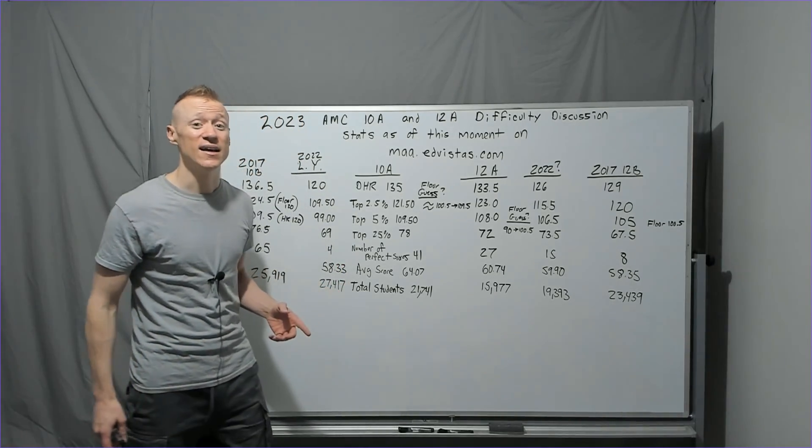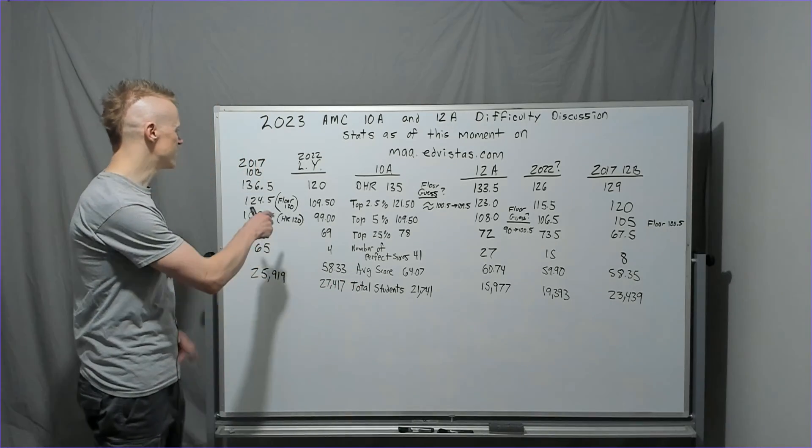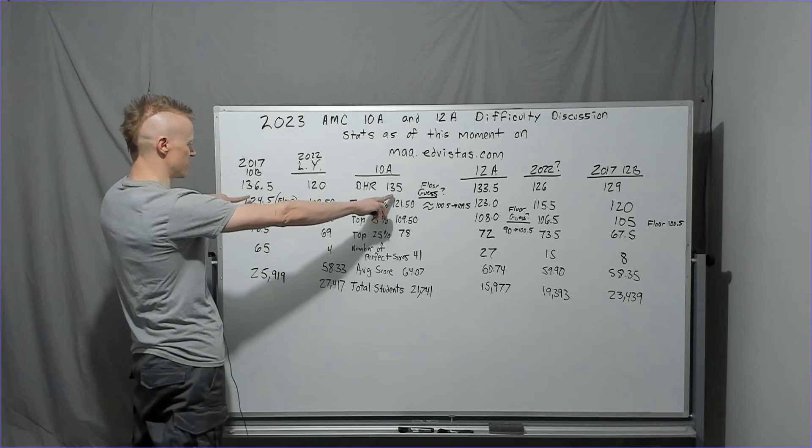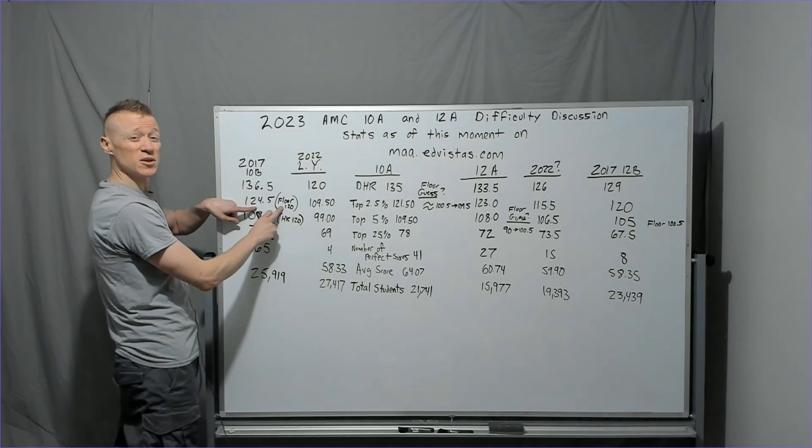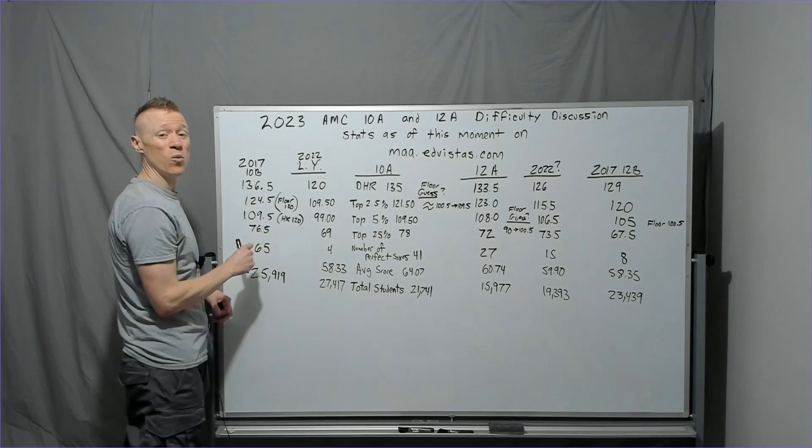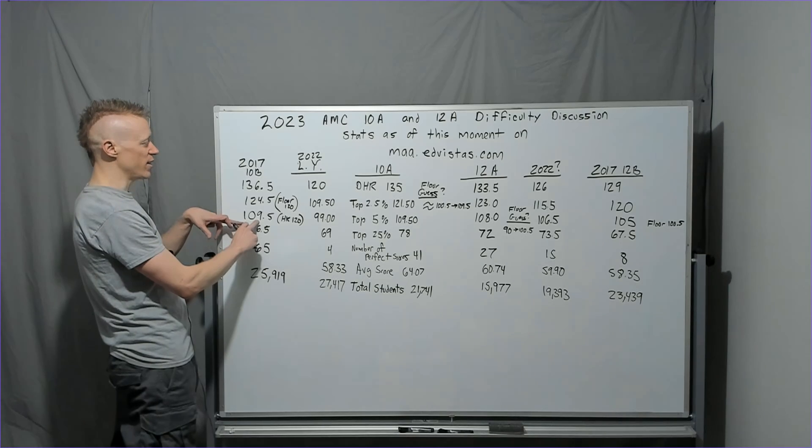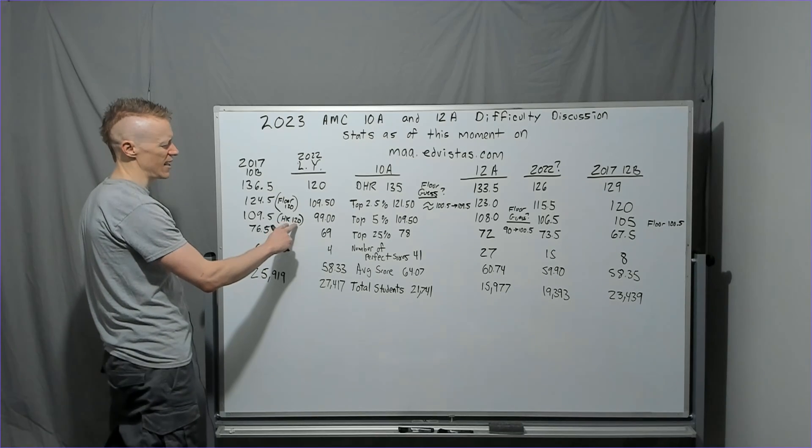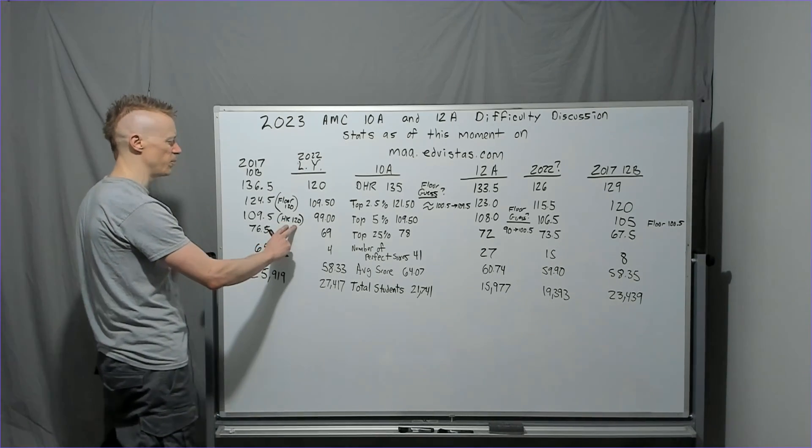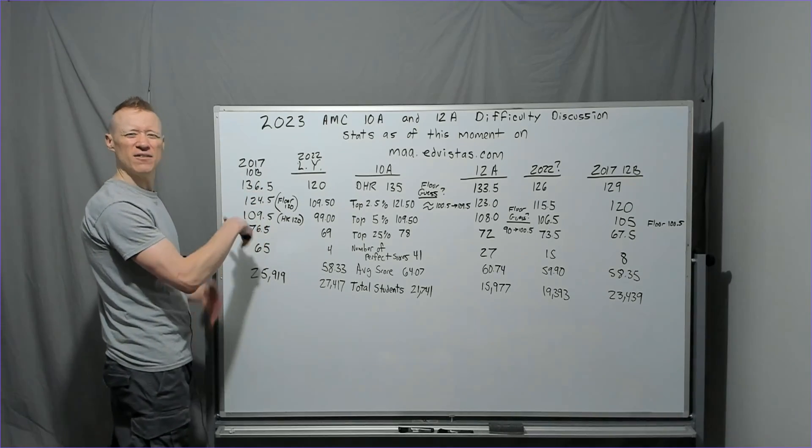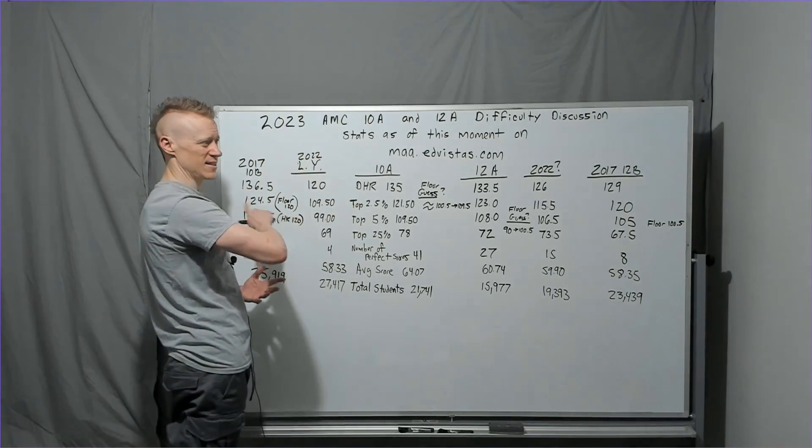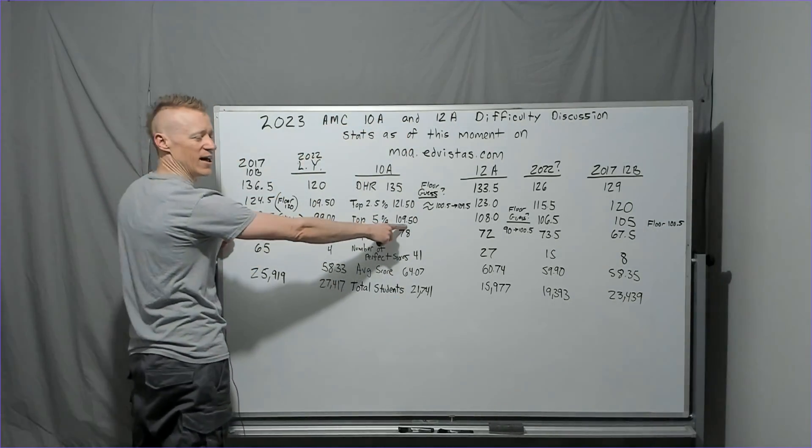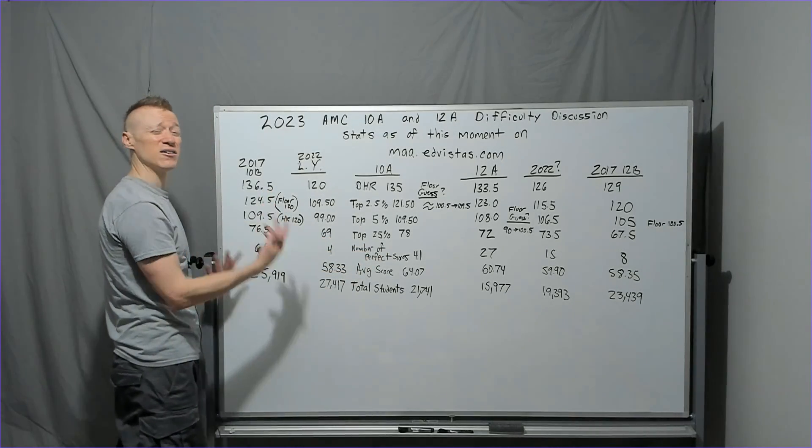The last time that I was able to score perfect or close to perfect was 2017 10B. Let's look at its stats off of the MAA statistics page and compare. 136.5, 135 pretty close. 124.5, the AIME floor was 120. That was the last time we had a 120 floor for the contest on the 10. The 109.5 was the top five percent.